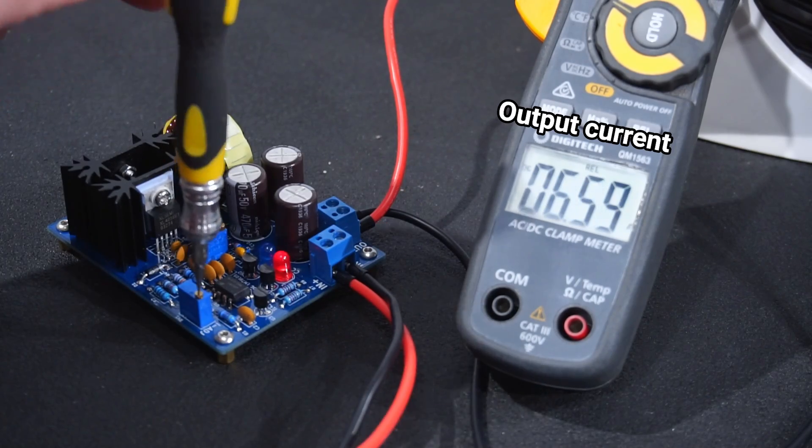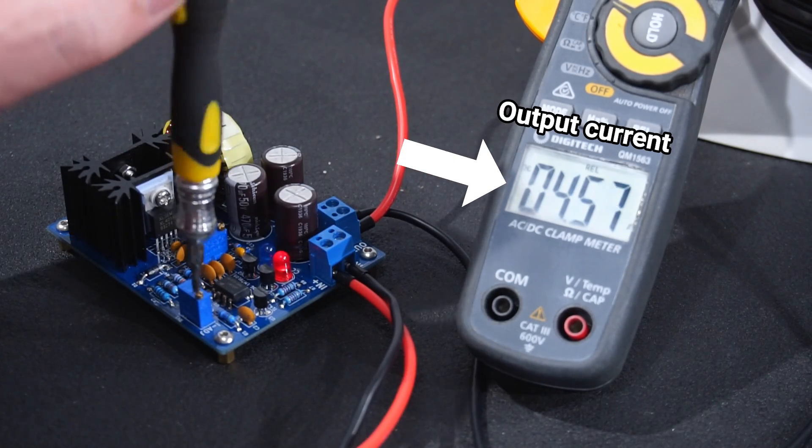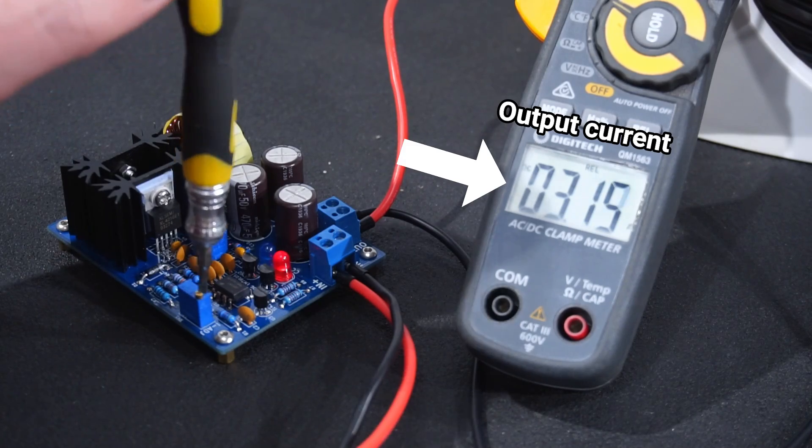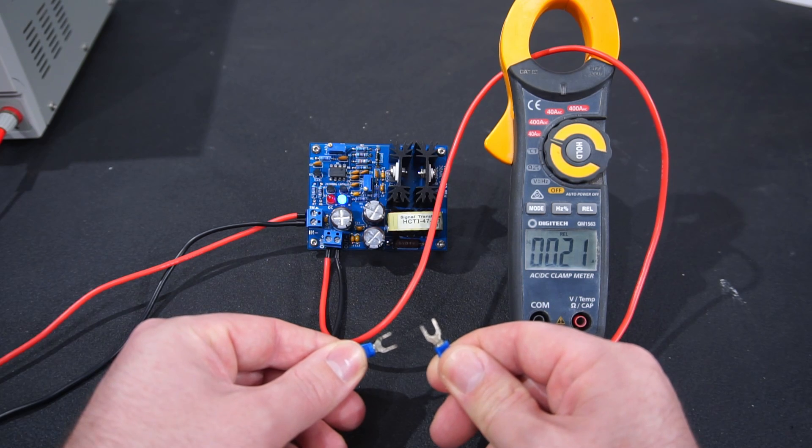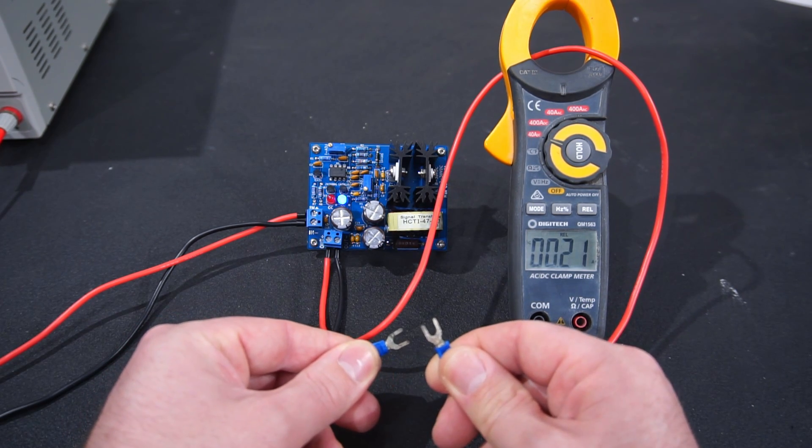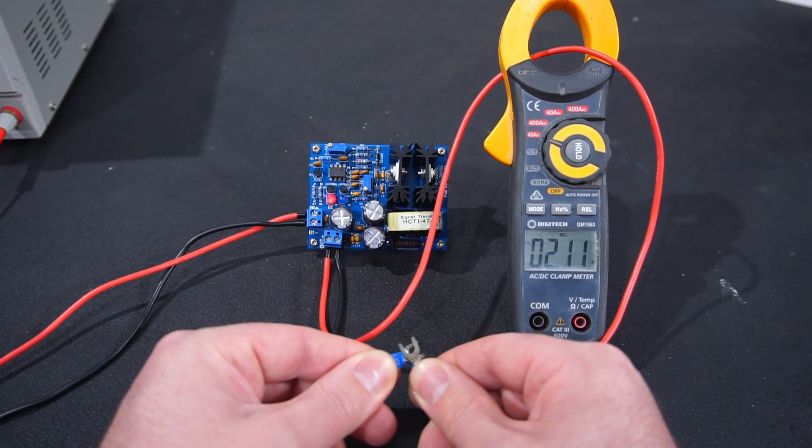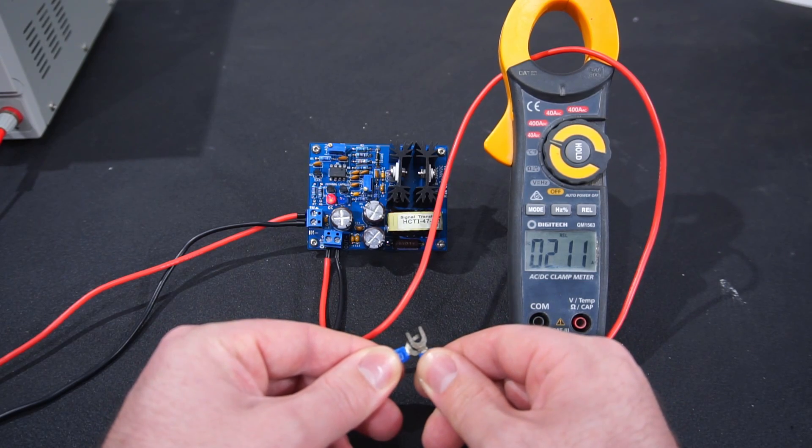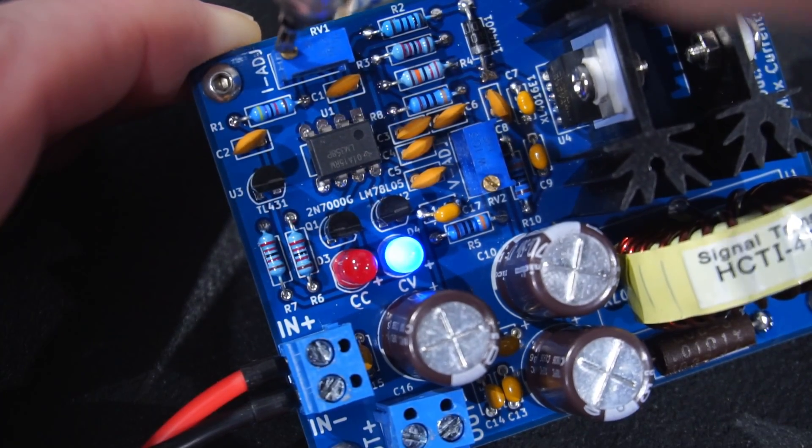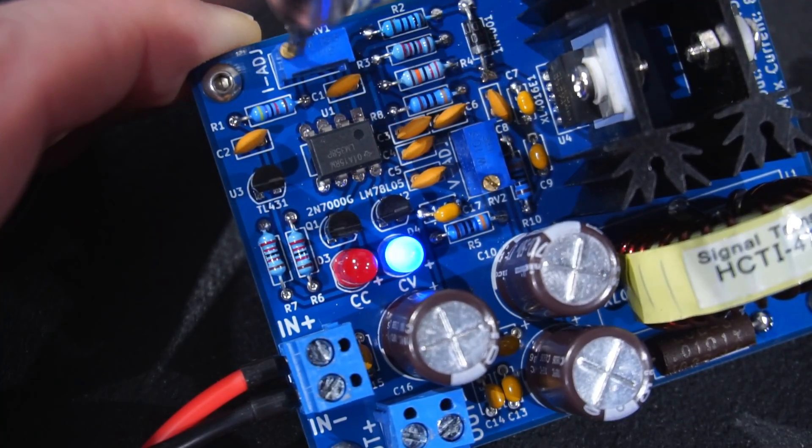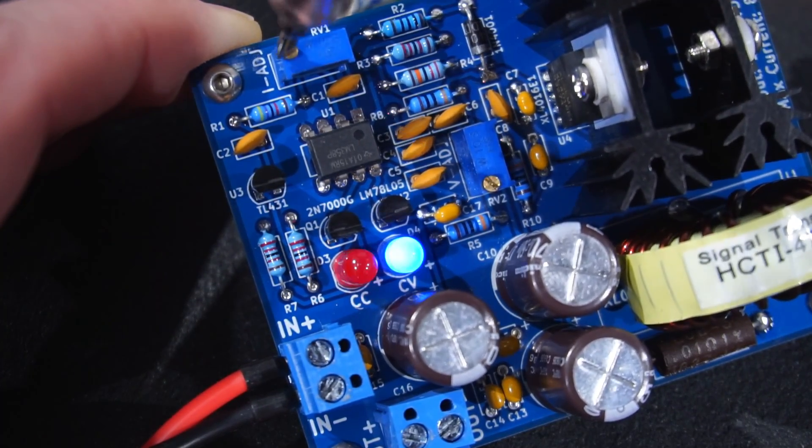And the constant current feature allows the user to program the maximum output current. With this feature you can safely dead short the output leads together without any risk of damaging the buck converter. Not only is this great for short circuit protection but also very useful for driving LEDs. There are two indicator LEDs which let the user know what mode the buck converter is in, whether it is in constant voltage or constant current mode.